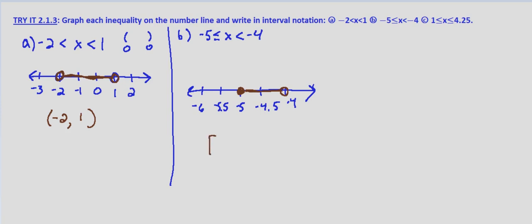Then writing this in interval notation, we want a bracket on the left-hand side, because it includes the negative 5. It goes to negative 4. It does not include negative 4, so we want a parenthesis there.